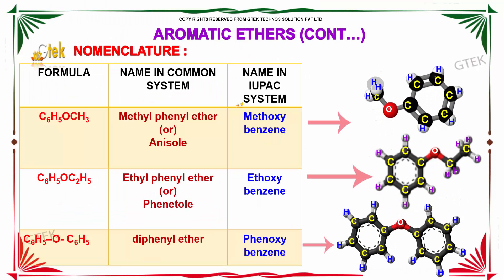The nomenclature of aromatic ethers is as follows. For the formula C6H5-O-CH3, the name in the common system is anisole or methyl phenyl ether, and the name in the IUPAC system is methoxybenzene. For the formula C6H5-O-C2H5, the name in the common system is ethyl phenyl ether or phenetole, and the IUPAC name is ethoxybenzene.